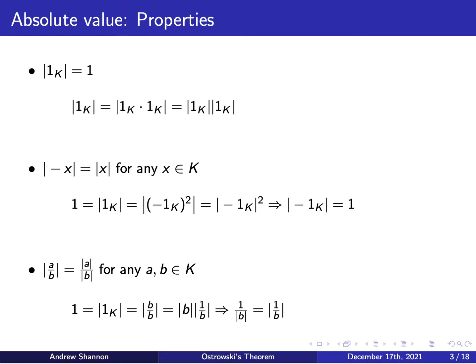From these four axioms, we can deduce a couple of basic properties about any absolute value. One, it always sends the one of the field to the real number one. Two, the absolute value of negative x is equal to the absolute value of x for any arbitrary element of the field. And three, the absolute value of the quotient of two elements a and b is equal to the quotient of the absolute values of a and b.